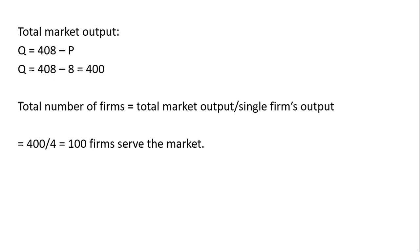And then using our information, we can back into the total number of firms in long-run equilibrium. The total number of firms will be the total market output, 400, divided by the single firm's output, which we found on the last slide to be four. So 400 divided by four, there are 100 firms serving this market. In other words, there are 100 firms each producing four units of output. That gets us the 400 units of output.